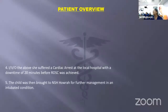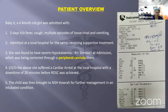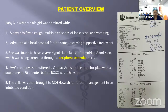We had a four-month-old baby girl with a five-day history of fever, cough, and multiple episodes of loose stools and vomiting. She was admitted at a local hospital and was receiving supportive treatment. On examination there, she was found to have severe hypokalemia around 1 mmol/L, being corrected only through a peripheral cannula. Due to persistent hypokalemia, she suffered a cardiac arrest with a downtime of around 20 minutes before ROSC was achieved.